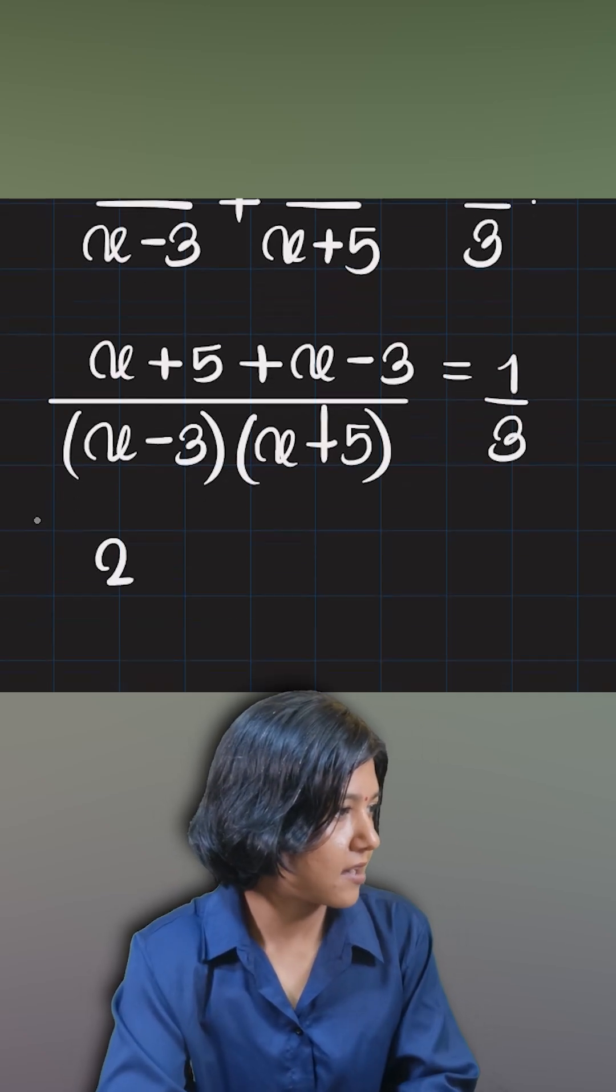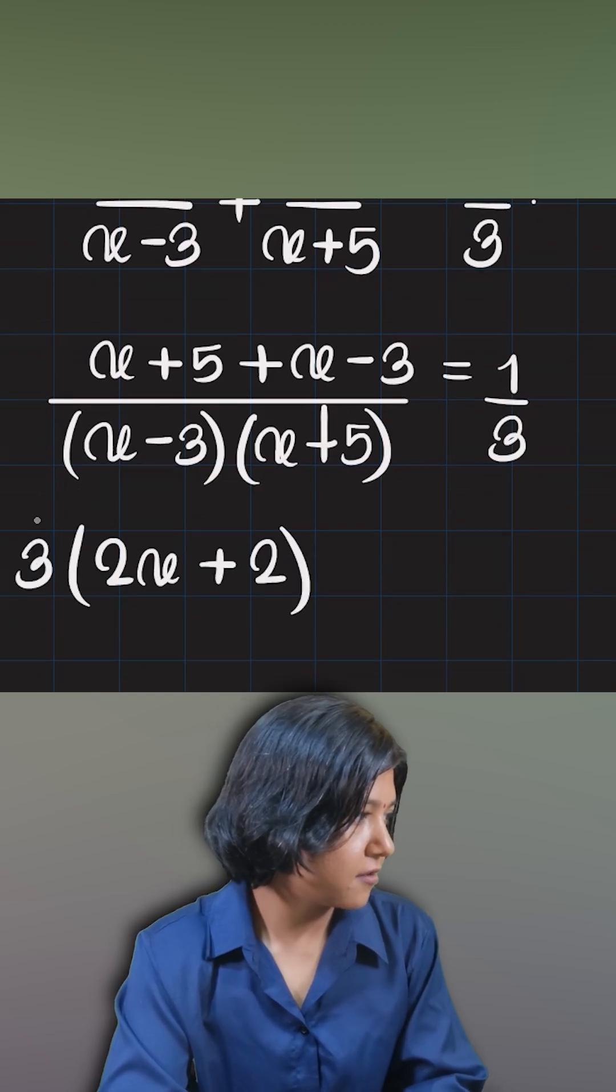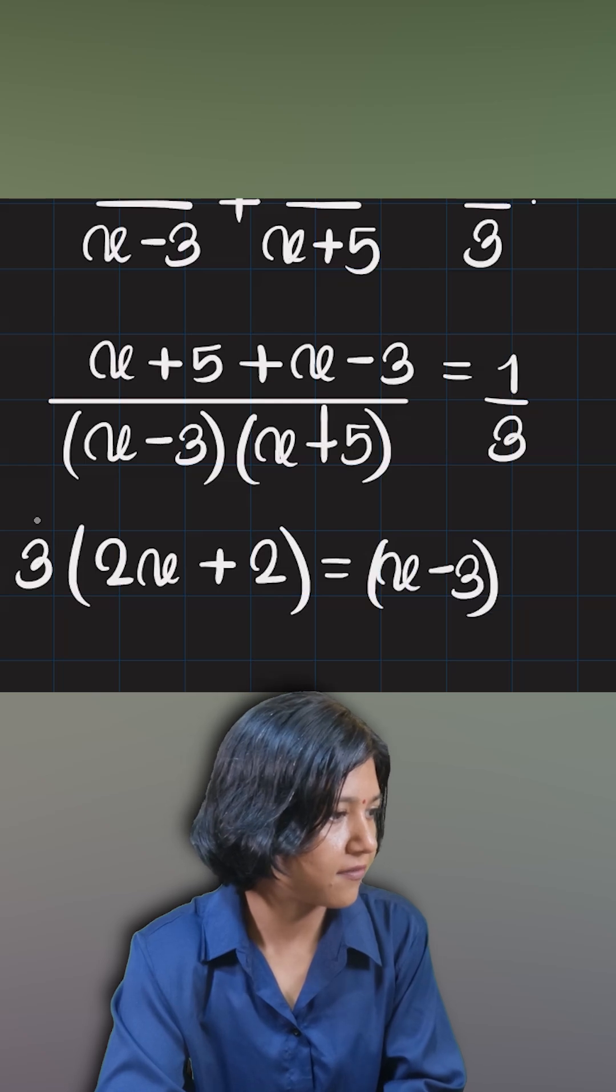Now you cross multiply. Before you cross multiply, you see you can simplify this: two x plus five minus three is plus two, so two x plus two. It gets cross multiplied with three, and this side we have x minus three times x plus five. So what you've got is nothing but a quadratic.